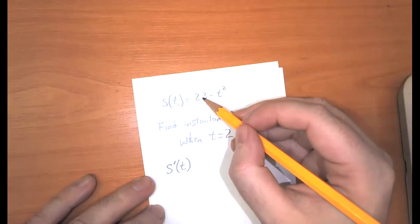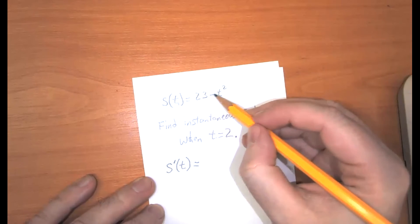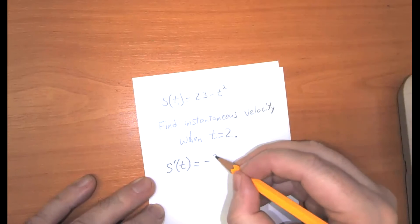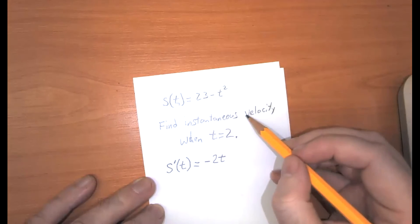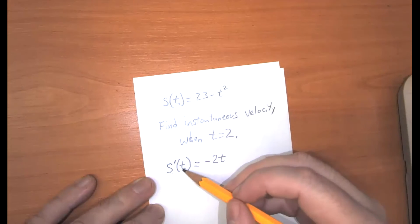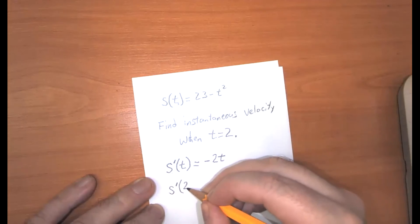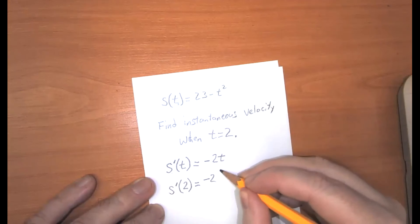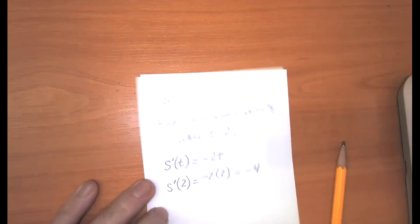So let's take the derivative of this. So 23, that's a constant, so that's going to have a derivative of 0. Negative t squared, so we're going to keep the negative, and the derivative of t squared is 2t. So the instantaneous velocity function is the derivative of s at t, which is negative 2t. So to answer the question they're asking is they want to know what's happening when t is equal to 2, which is equal to negative 2 times 2, which is equal to negative 4.